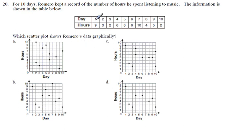This is a very easy question, but you just have to take it one step at a time. Day 1, it's supposed to be 9 hours, so go over to day 1 and go up to 9 and there's supposed to be a dot there, so this is wrong right off the bat.